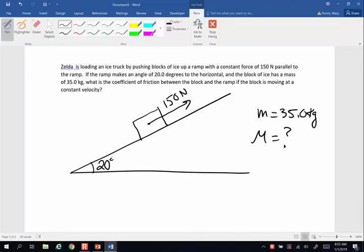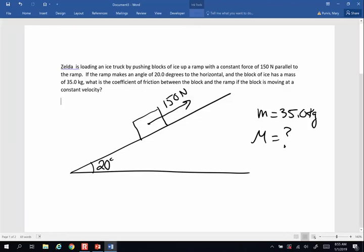As always, we're going to start and draw all the forces on our block. So this is my force applied. Friction opposes motion, so if it's being pushed up the ramp, friction is going to be down the ramp. Friction is in the opposite direction of motion. Force of gravity straight down towards the center of the earth, and normal force perpendicular to the surface.